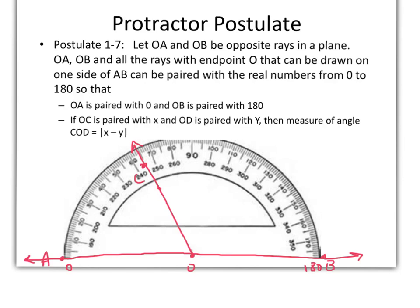If OC is paired with some angle x and OD is paired with angle y, then the measure of angle COD is the absolute value of x minus y.